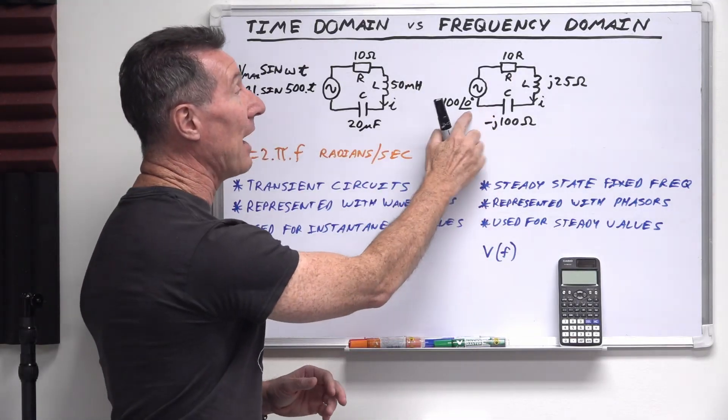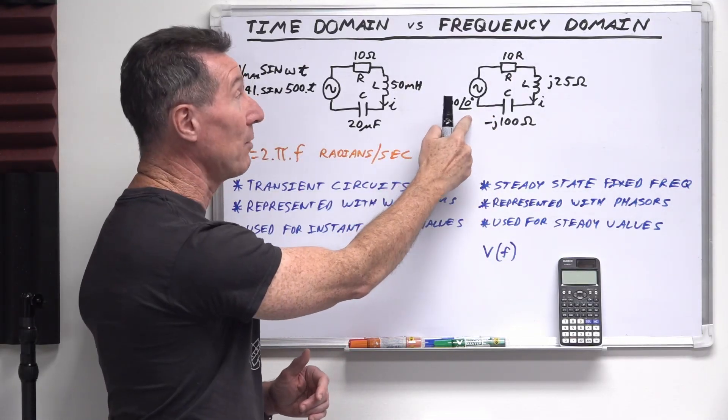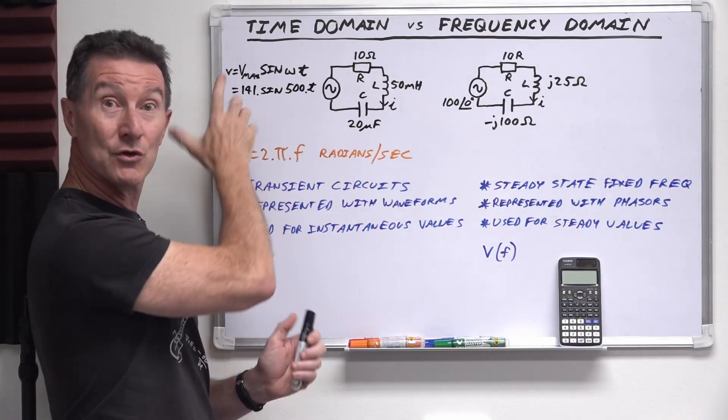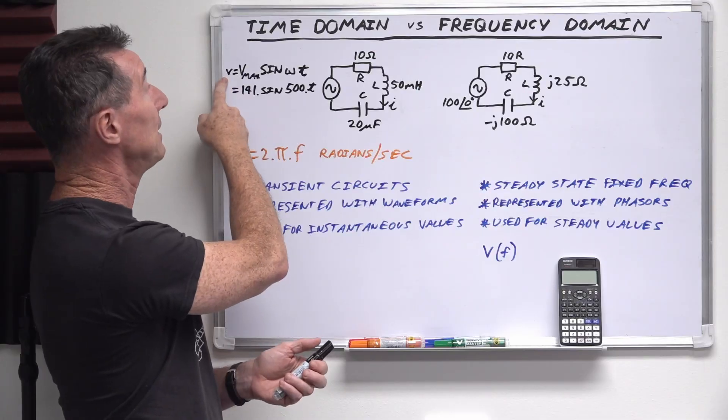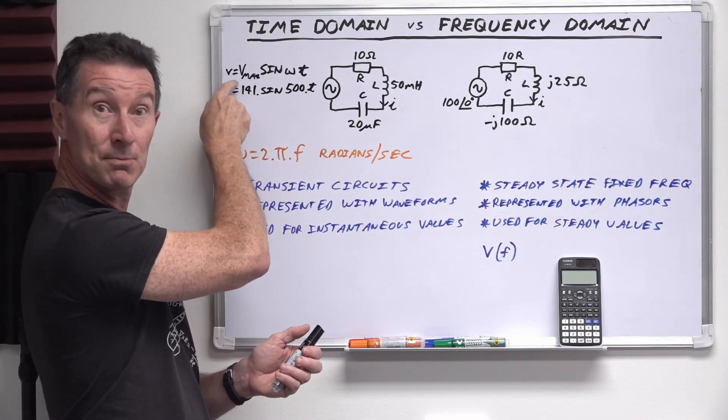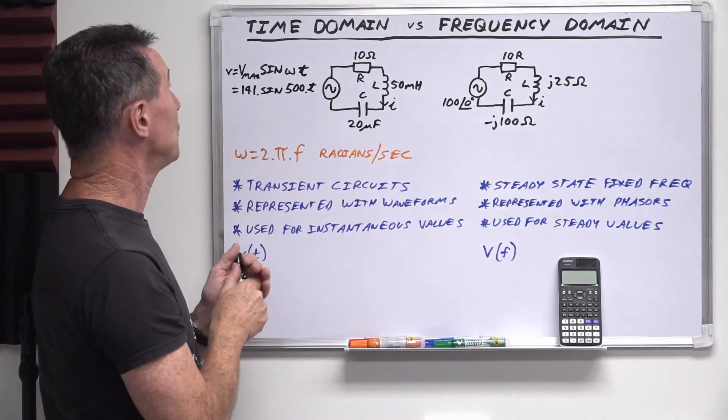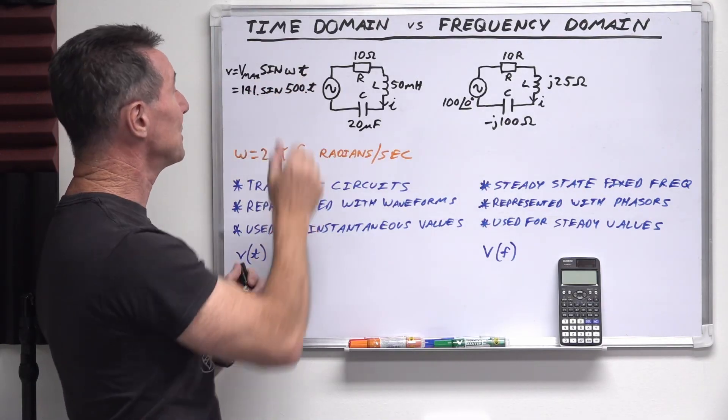In this case, we're dealing with a phasor representation. So we've got the angle, magnitude and the angle here. We have an instantaneous value. You saw this in the previous video. The instantaneous value, which is a small v, equals v max, which is the peak voltage of your waveform, sine omega t.